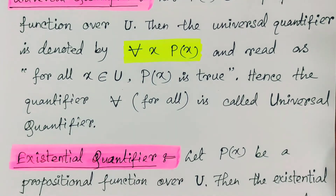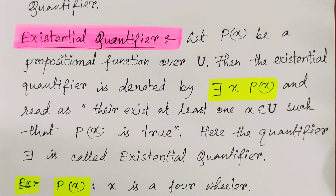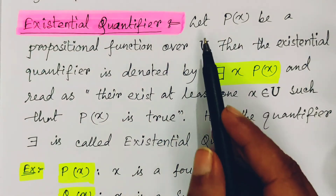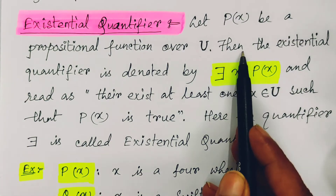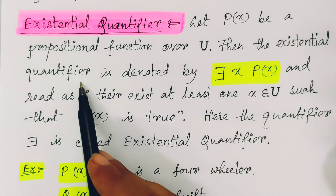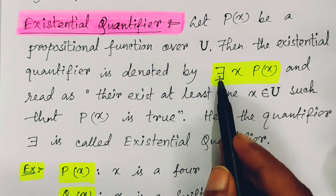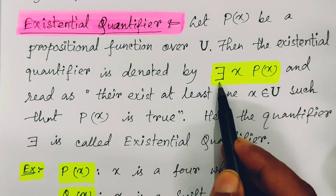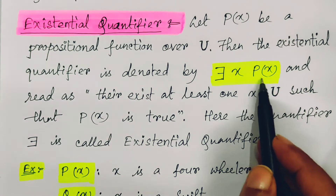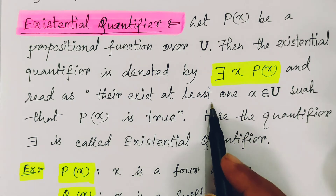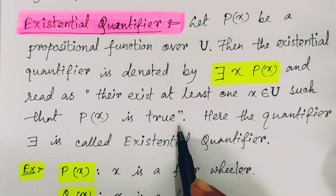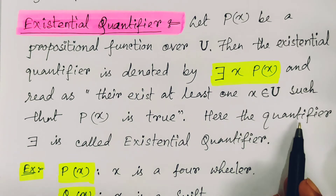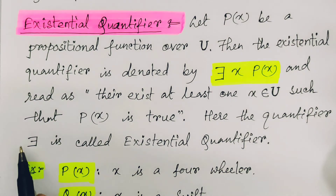Likewise, for the existential quantifier, let P(x) be a propositional function over U, where U is the universal set. Then the existential quantifier is denoted by '∃x P(x)' and is read as 'there exists at least one x belonging to U such that P(x) is true.' This quantifier ∃ is called the existential quantifier.